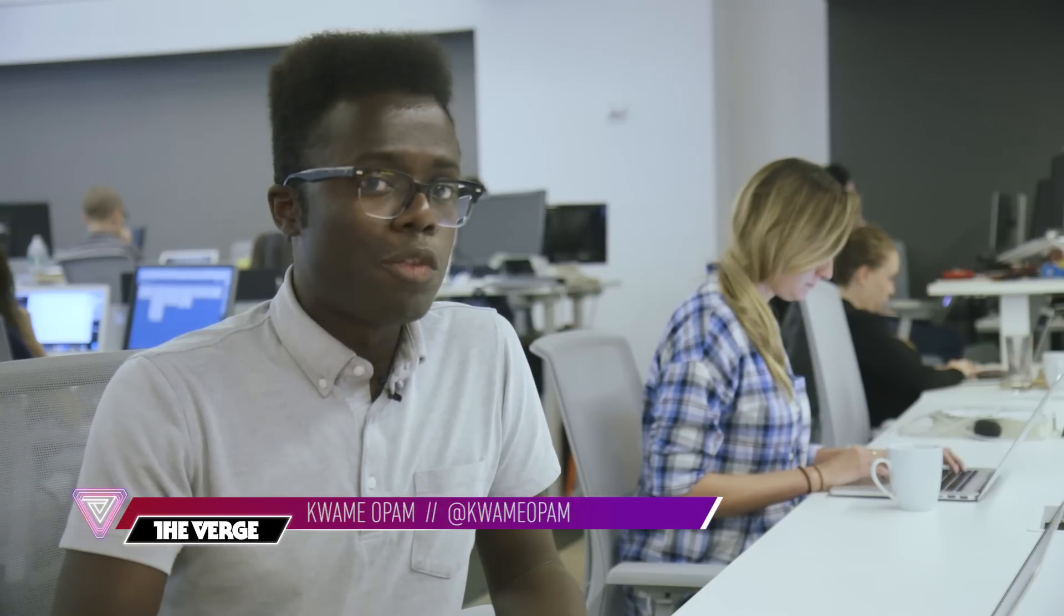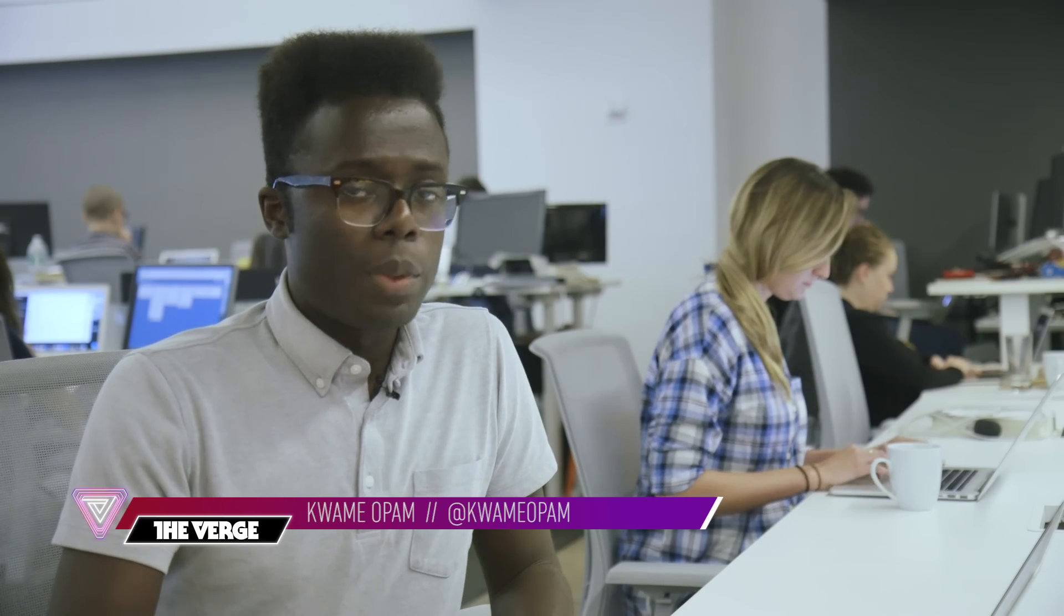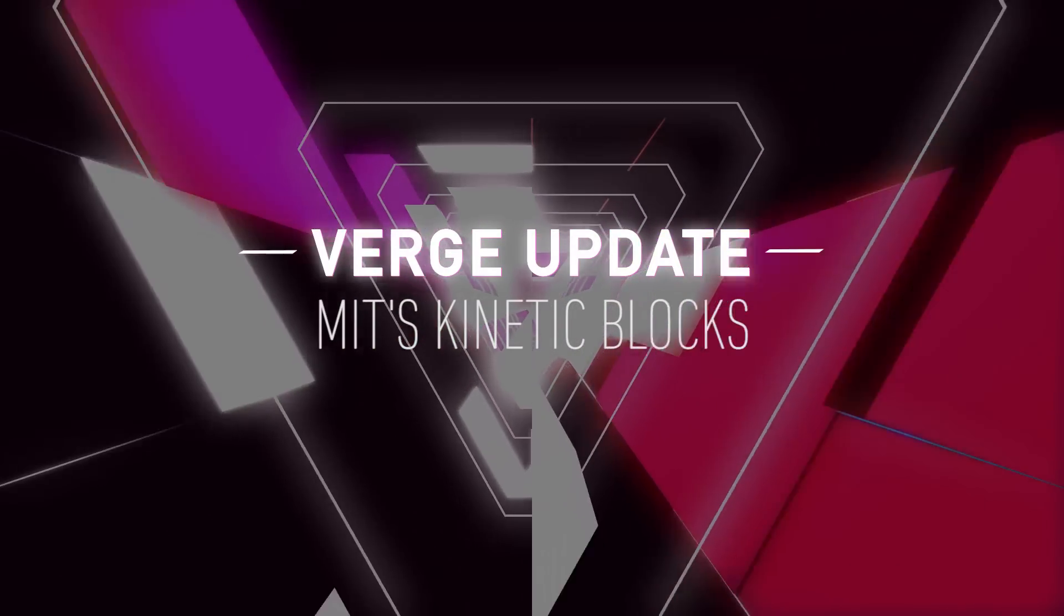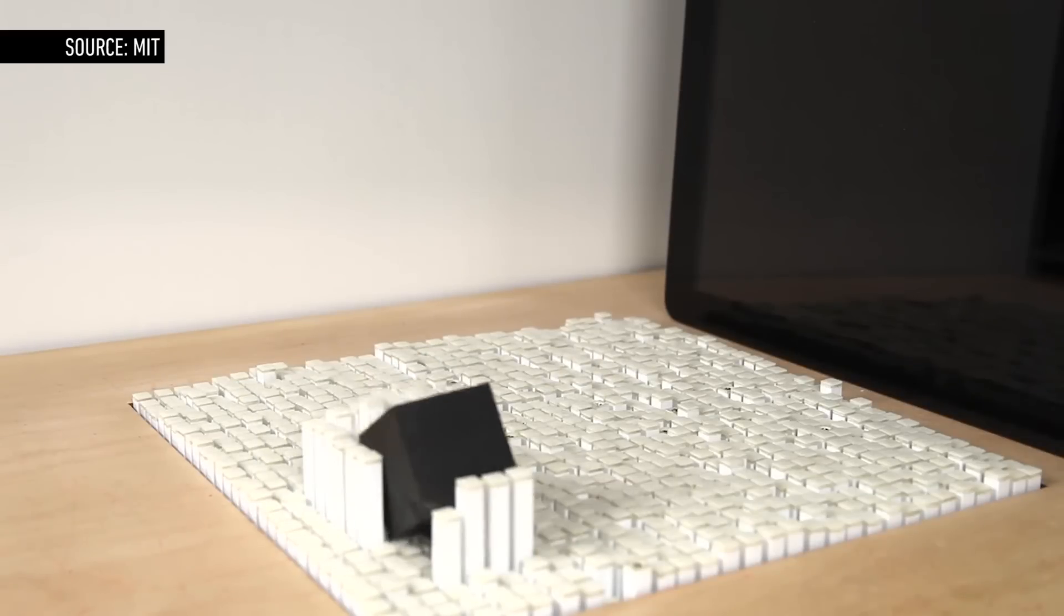So think about how we build things. It's pretty complicated, right? Involving an assembly line of robots or actors to build something. That's pretty cool. But what if you had one robot, and that robot was a screen? That's basically what MIT's done with its Kinetic Blocks project.